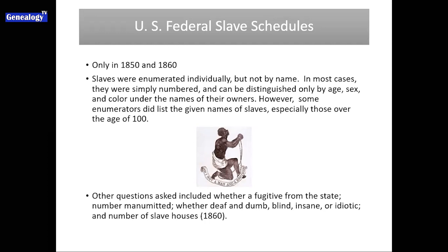Sometimes, lucky for a few people doing this work, the enumerators did list the given names of the enslaved. They were supposed to do that if the enslaved person was 100 years or older, but we have found a few cases where the enumerator actually put in the actual names of the enslaved. If you're lucky enough to find one of those, that document becomes even more valuable. But initially, this document is really being used just to identify slave owners so you can narrow down potential owners for your ancestors.